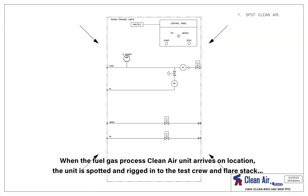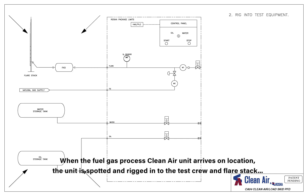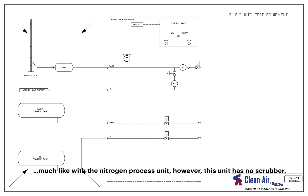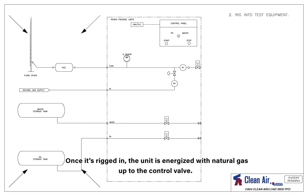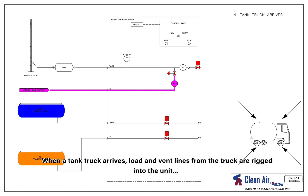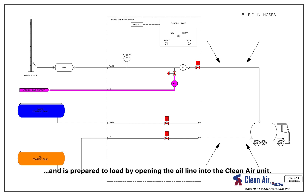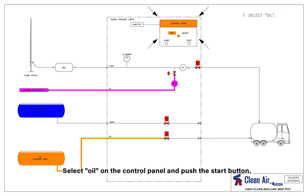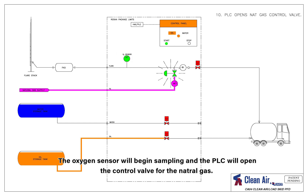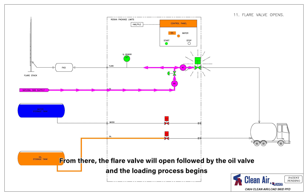When the fuel gas process Clean Air unit arrives on location, the unit is spotted and rigged into the test crew and flare stack. Much like with the nitrogen process unit, however, this unit has no scrubber. Once it's rigged in, the unit is energized with natural gas up to the control valve. When a tank truck arrives, load and vent lines from the truck are rigged into the unit and it is prepared to load by opening the oil line into the Clean Air unit. Select oil on the control panel and push the start button. The oxygen sensor will begin sampling and the PLC will open the control valve for the natural gas. From there, the flare valve will open followed by the oil valve, and the loading process begins.